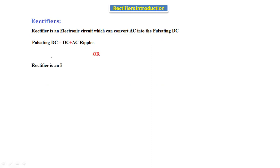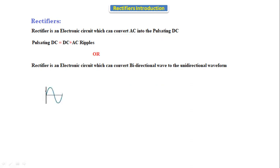A rectifier can also be defined as an electronic circuit which converts a bidirectional waveform to a unidirectional waveform. Looking at the waveform: we give input AC to the rectifier circuit, and we get the pulsating DC as output.